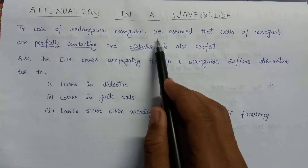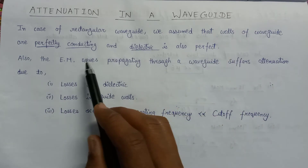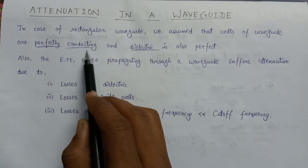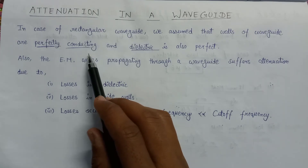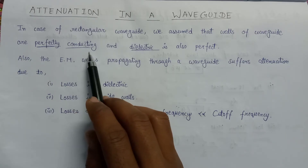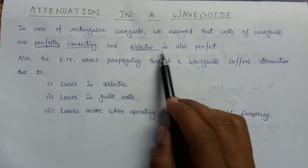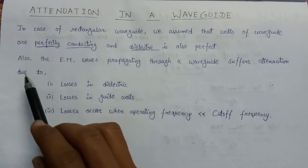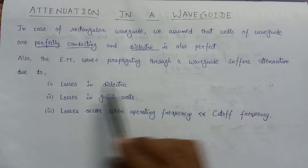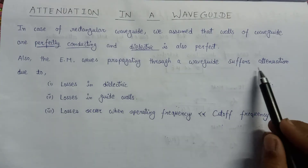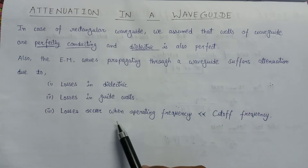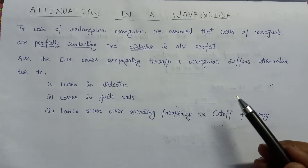In the case of rectangular waveguide, we assume that the walls of the waveguide are perfectly conducting. By perfectly conducting, we mean the value of sigma — that is, conductivity — is equal to infinite, and also the dielectric is perfect. Now, the electromagnetic wave propagating through the waveguide suffers some attenuations. These attenuations occur due to losses, and there are basically three types of losses due to which attenuation in the waveguide occurs.